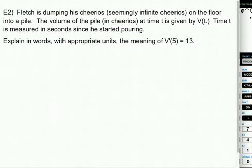Alright, cool. So Fletch is dumping his Cheerios, seemingly infinite Cheerios, on the floor into a pile. The volume of the pile is given by V(t) at time t measured in seconds. Since he started pouring, explain in words what V'(5) equals 13 tells us. So remember, V(t) is the volume of the Cheerio pile measured in Cheerios. Like there's 10 Cheerios in the pile, there's 30 Cheerios in the pile, there's 5 Cheerios in the pile, whatever it is.